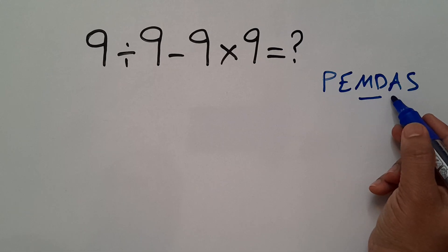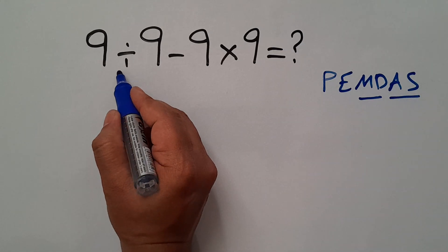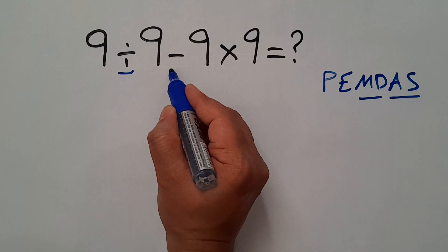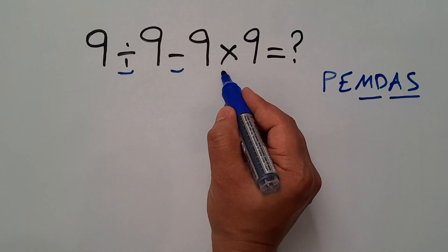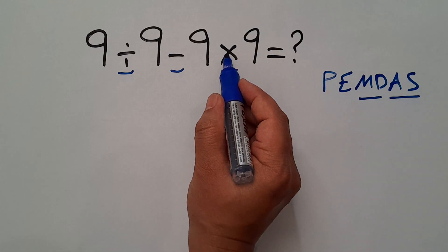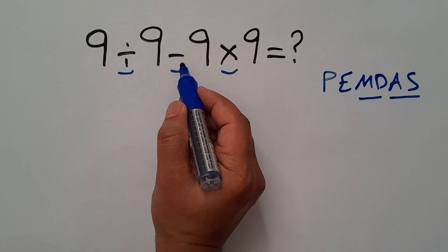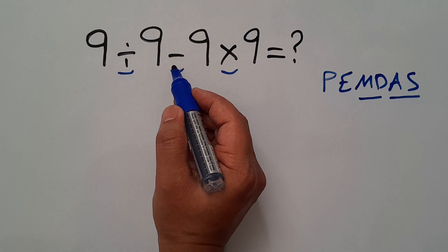Here we have one division, one subtraction, and one multiplication. According to PEMDAS, multiplication and division have higher priority than subtraction. And as we know, multiplication and division have equal priority, and we have to work from left to right.